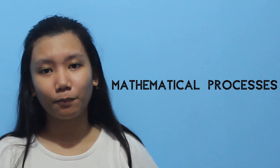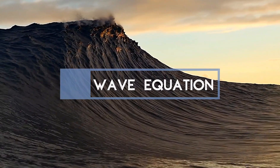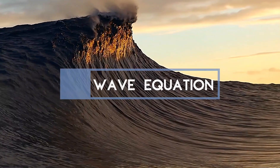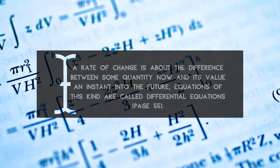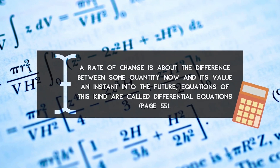Due to Newton's laws of physics, the change in nature can be described using mathematical processes. For example, the wave equation describes the rate of change of the height of a wave. A rate of change is about the difference between some quantity now and its value an instant into the future. Equations of this kind are called differential equations — and with that, we get a callback to calculus. Other real-life examples where differential equations are applied include explaining exponential growth and decomposition, the modification of return on investment over time, and the modeling of cancer growth or the spread of disease.